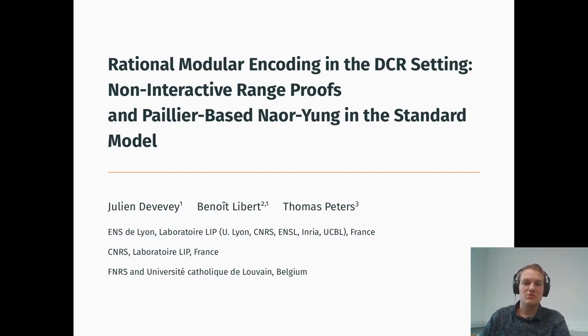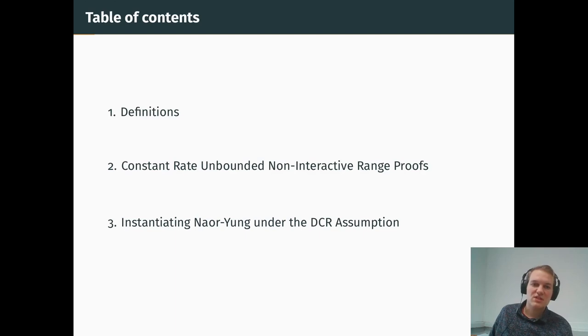This is joint work with Benoit Libert and Thomas Peters. As the title suggests, we will be using a particular rational encoding to build a non-interactive range proof that satisfies constant rate and unboundedness, and we also instantiate the Naor-Yung paradigm under the DCR assumption.